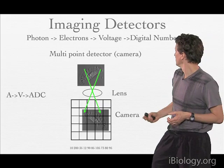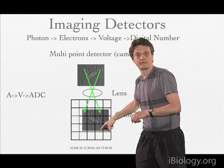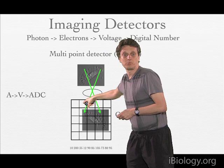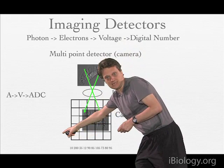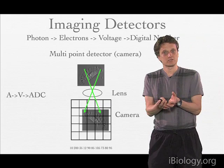For multipoint detectors — cameras — on the other hand, we use a lens to project the image straight onto the multipoint array, so we get an image formed onto the camera itself. From then on it's more or less the same principle: all those photosensitive elements build up charge, at a certain point the charge is converted into a voltage, and in the end it's converted into a sequence of numbers that is sent to the computer to build up the image.